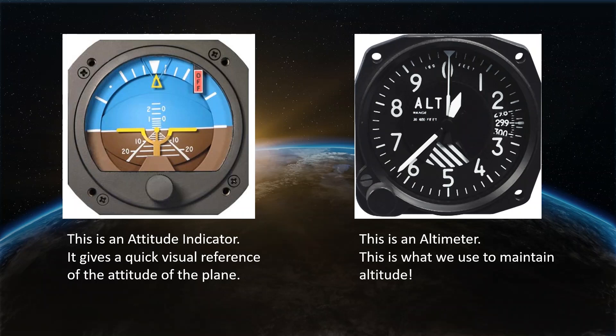The attitude indicator also gives us an indication of bank angle. The little triangle at the top is showing zero bank right now, and each mark is 10 degrees — so 10, 20, the longer line is 30 degrees, the little dot is 45 degrees, the next big line is 60 degrees. Do not go there unless you like pulling two G's — that's not recommended. The knob only adjusts the vertical position of the little yellow wings representing the airplane, and that's only done for parallax for pilots of different heights. When you sit down in the seat, if a tall pilot has been flying, you may need to turn that knob to get the wings to line up on the horizon. That's the only thing it's used for.